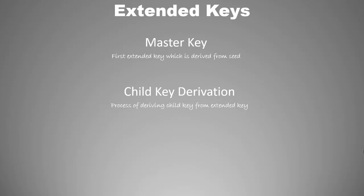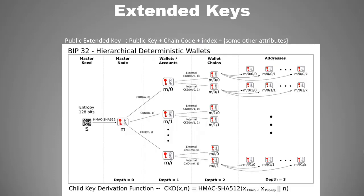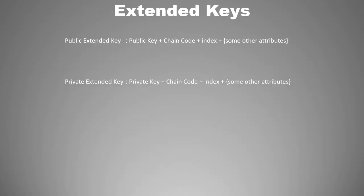Child key derivation can be of different types depending on certain factors. Apart from key and chain code, there is one more thing which plays a very important role in deriving multiple children from a single parent, and that is the index number, which is a 32-bit value. From one parent key, multiple children keys are created, and this is possible with the help of the index number.